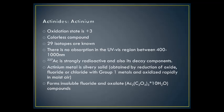Actinium: its chemistry is dominated by the plus-3 oxidation state. Its compounds are colorless, and there are 29 known isotopes. It does not have absorption in the UV-visible region between 400 and 1000 nm. ²²⁷Ac is strongly radioactive, as are its decay products. Actinium metal is a silvery solid obtained by reduction of the oxide, fluoride, or chloride with group 1 metals, and it oxidizes rapidly in moist air. It forms insoluble fluoride and oxalate Ac₂(C₂O₄)₃·10H₂O compounds.